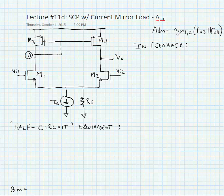Here we're going to find the common mode gain, or ACM, for a source-coupled pair with a current mirror load.